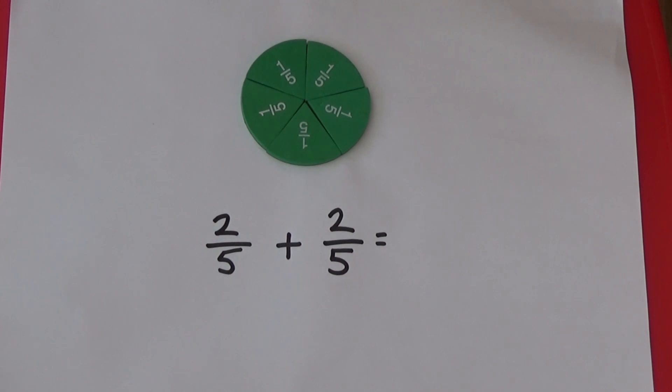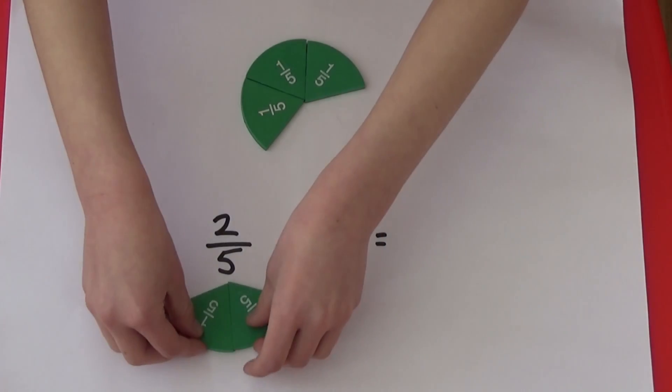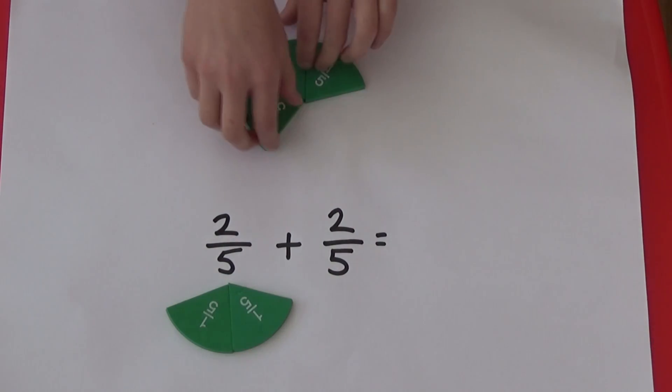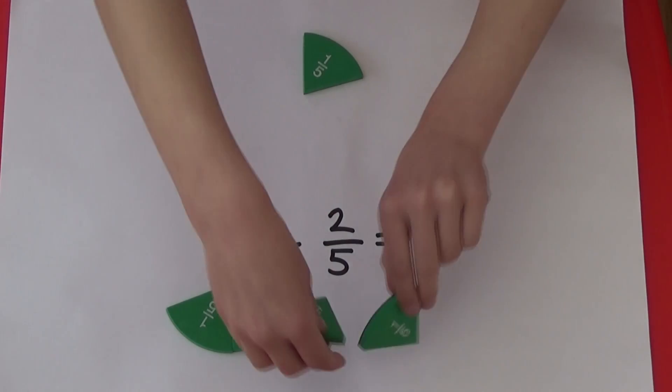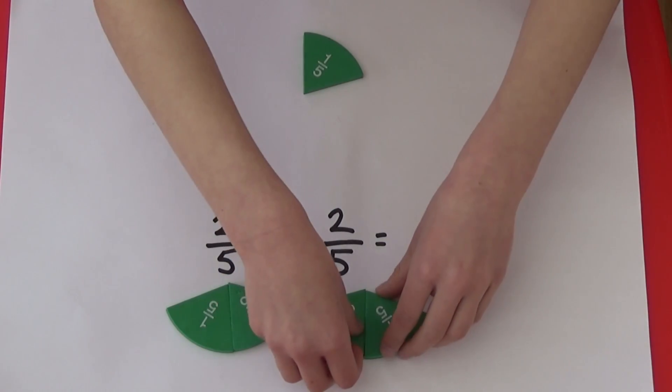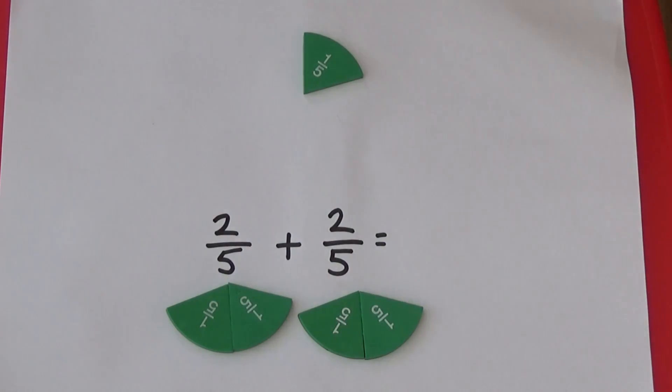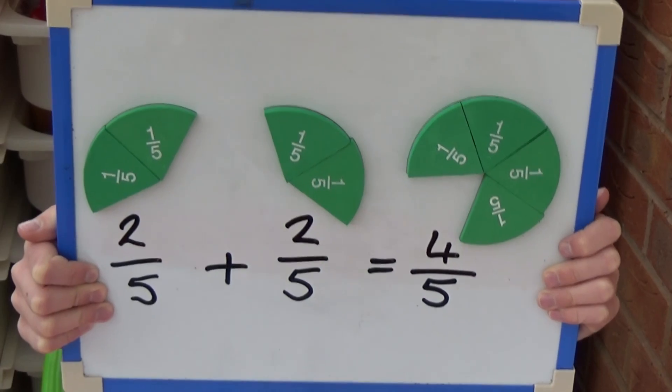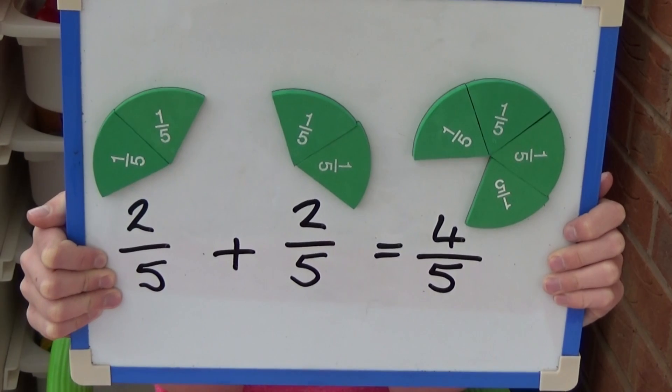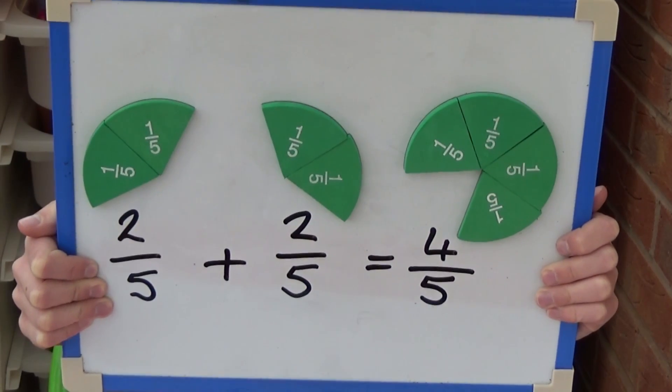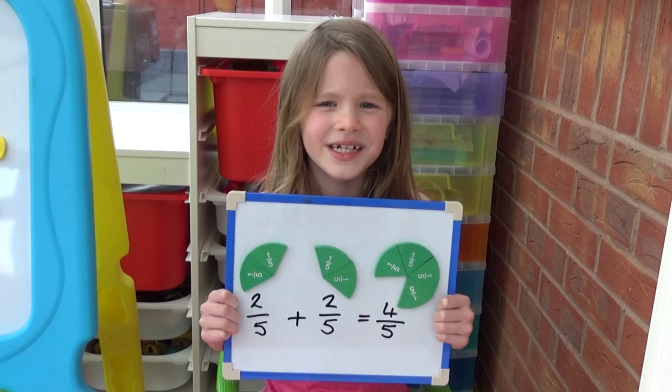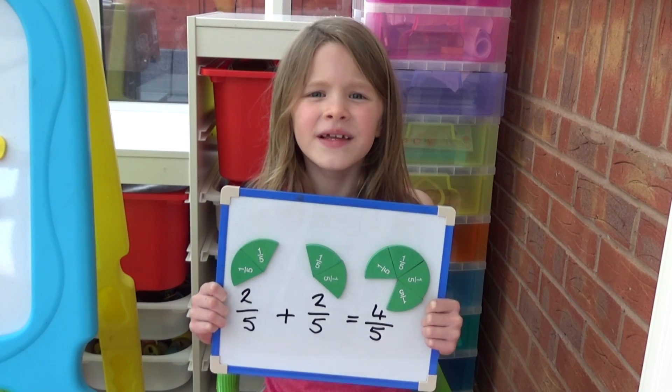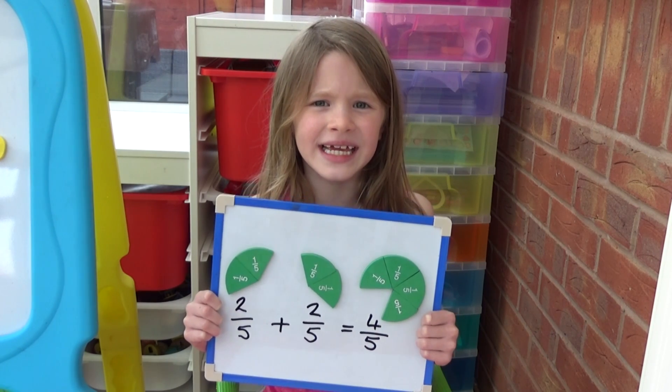We need to add together two fifths and two fifths. So all together we have four fifths. So two fifths add two fifths are four fifths. When you add fractions with the same denominator, the denominator doesn't change.